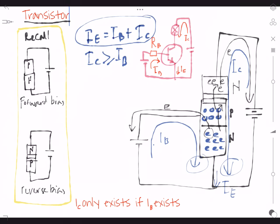So in short we can say that IC, this IC, only exists if we have IB, I base. So you need to remember this.